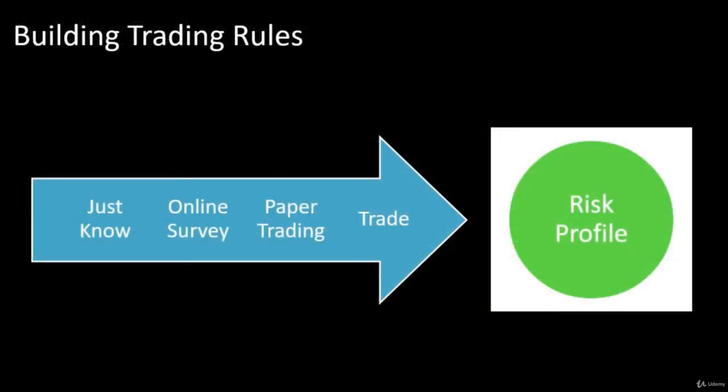When you're building these trading rules, sometimes you might feel like you just know your risk profile. You might know you're a wild-eyed, crazy, take-any-risk trader, or you might know you're a more cautious type. A better way is to do an online survey — search for 'trading risk profile' and you'll find multiple-choice questionnaires that will categorize your risk profile. You can interpret the results and confirm what you might feel in your gut.